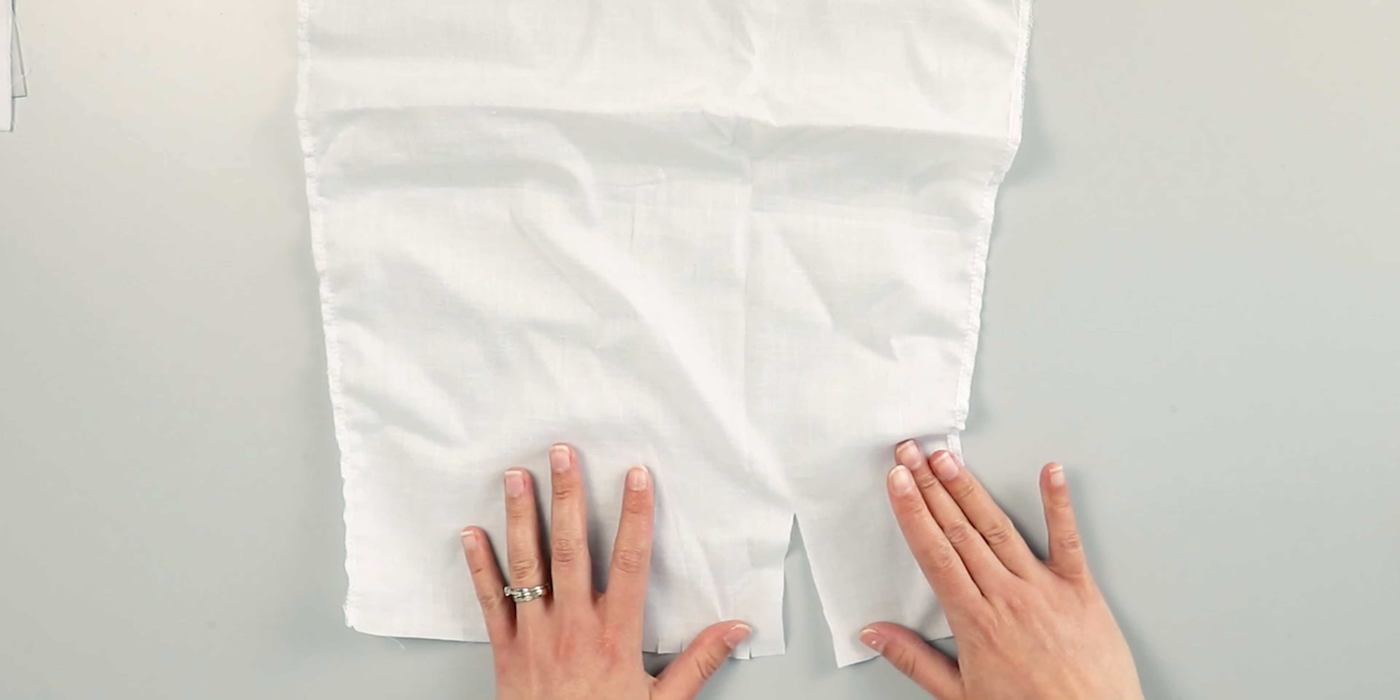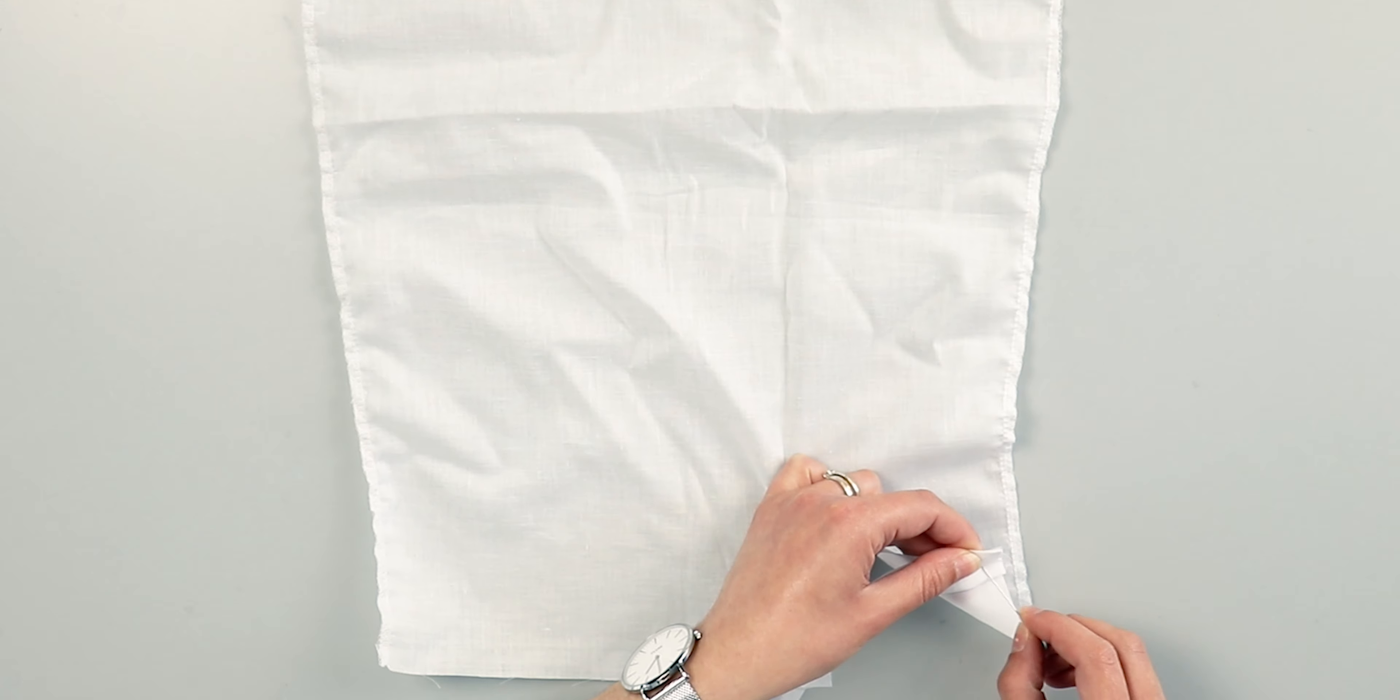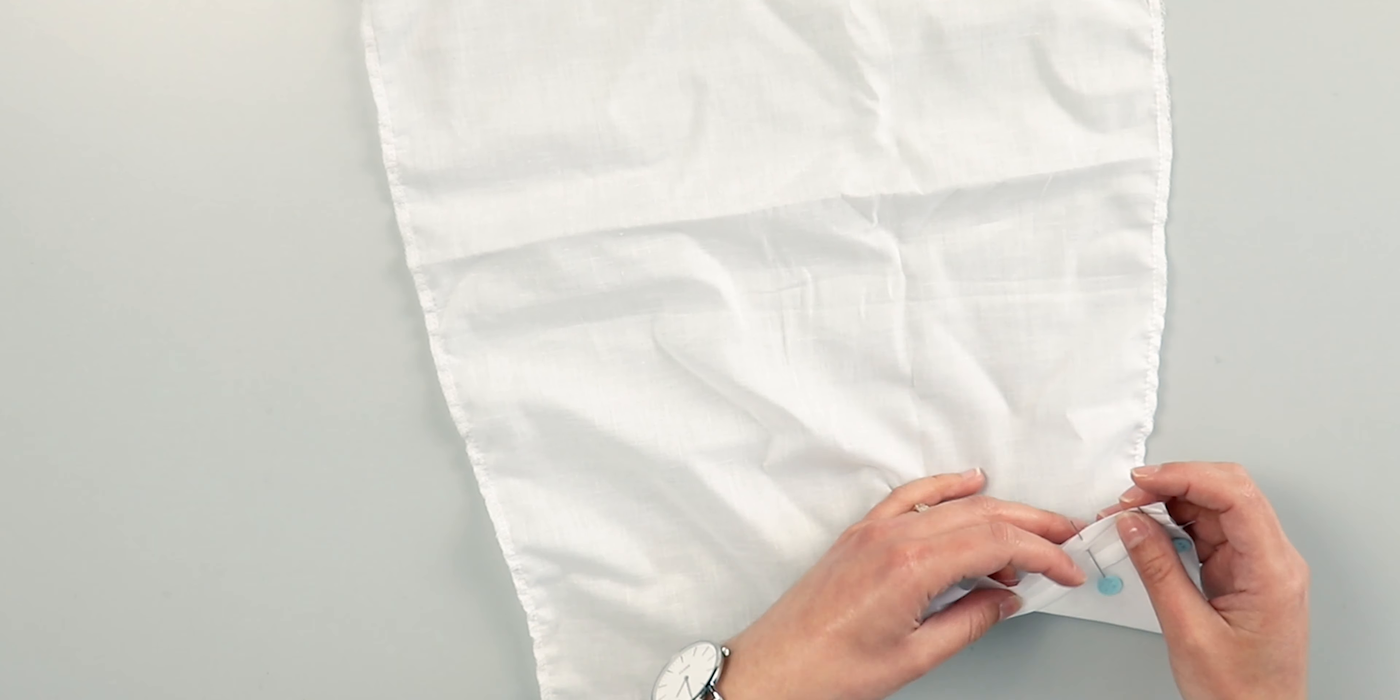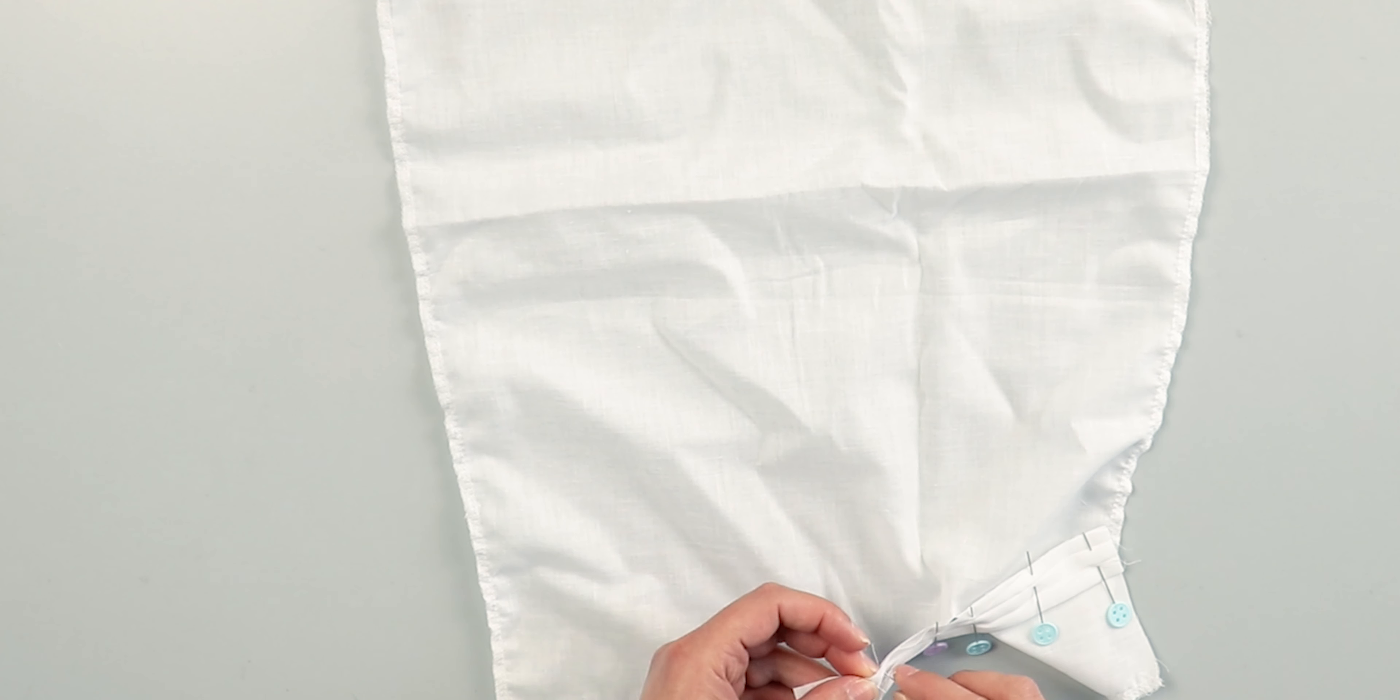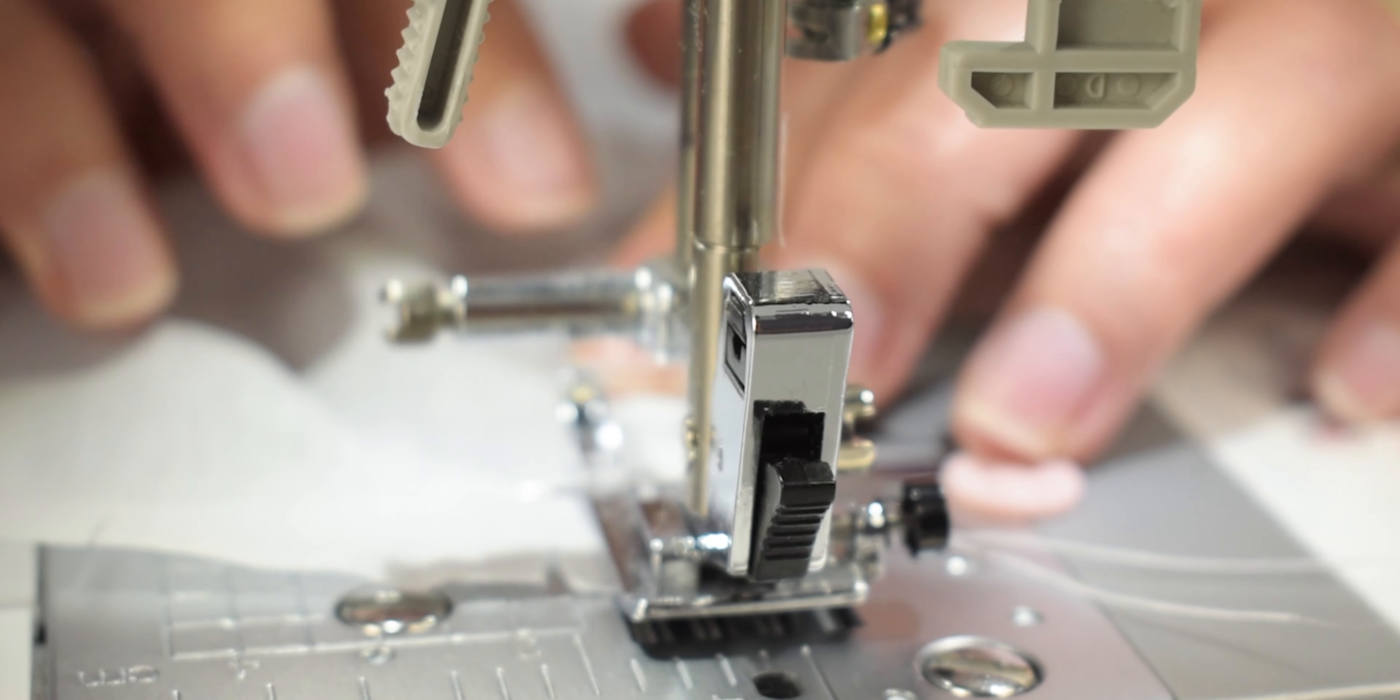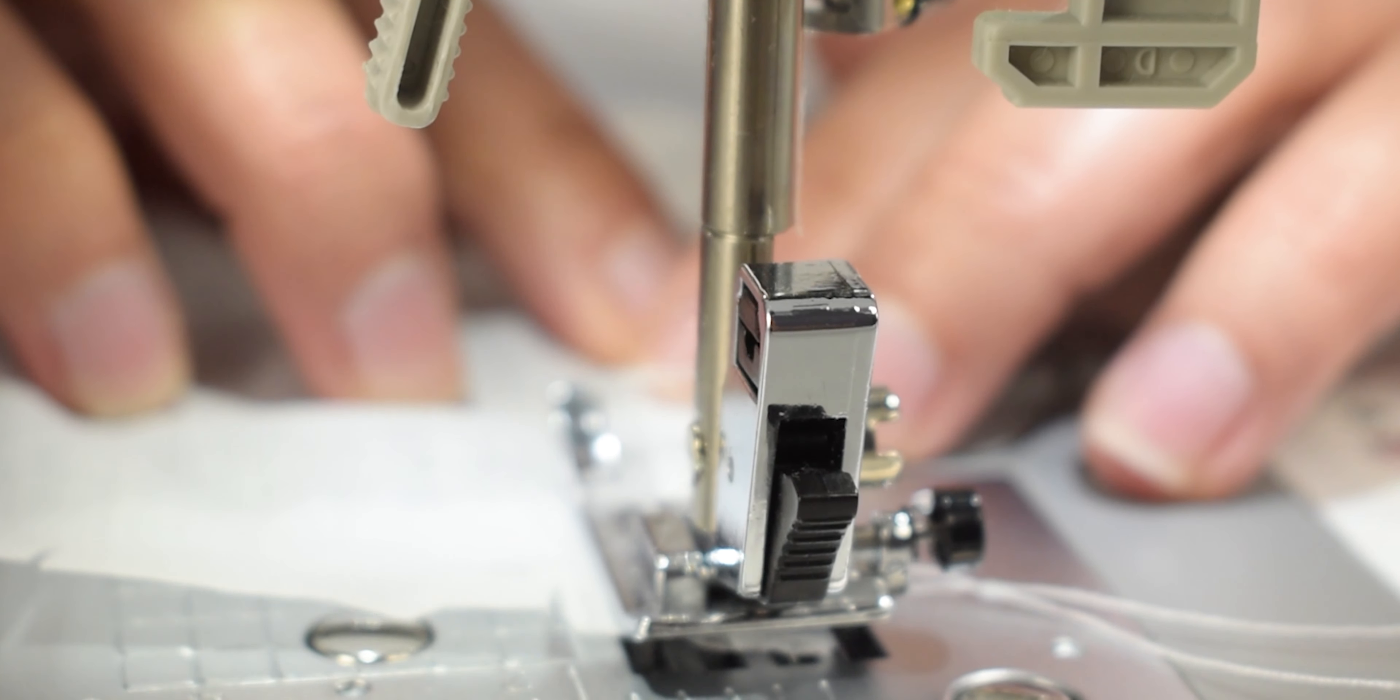Open the sleeve split and place the sleeve binding along the split. Pin one end and sew.